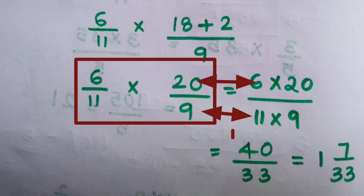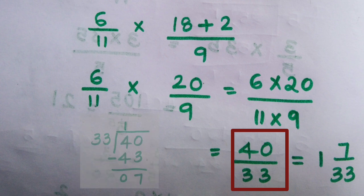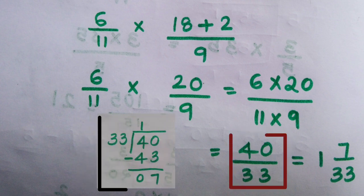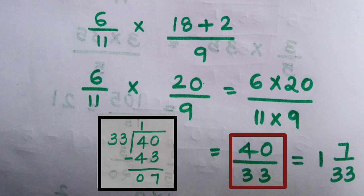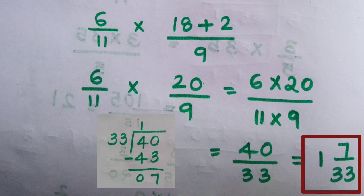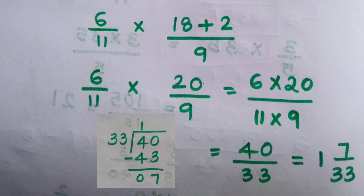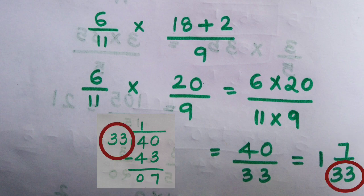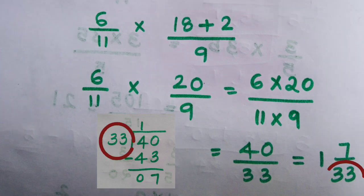The numerator we get is 120 — wait, numerator we get 40 and the denominator is 33. Then convert into a mixed fraction: 40 divided by 33 gives 1 and 7/33. We write the quotient 1, then the remainder 7, and the divisor 33.